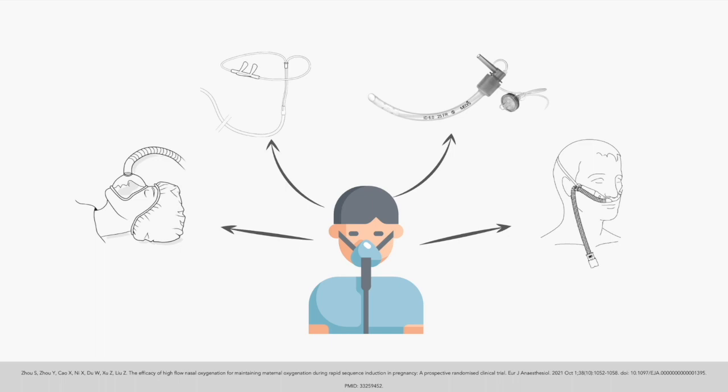Finally, high flow nasal oxygen therapy. I think that this is probably the future of difficult airways in the obstetric setting, but we just don't have the evidence yet. However, a study published by Zhao et al. in 2021 looked at using high flow nasal oxygen during rapid sequence inductions in pregnancy. They found a statistical significance in terms of increased PaO2, but there was no difference in the lowest sats achieved. There is a study currently being conducted in Sweden with results expected in 2022, and it will be interesting to see what they find.